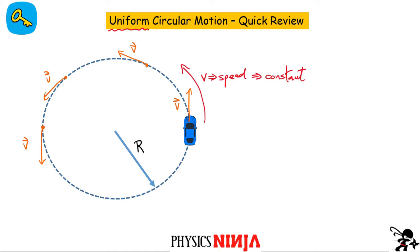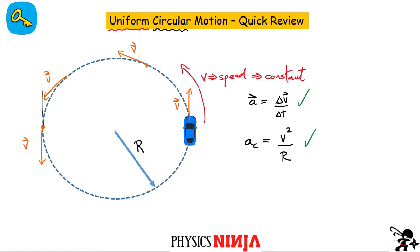Since velocity is changing, there must be an acceleration. That acceleration depends on how velocity changes with respect to time. We call this centripetal acceleration, and its magnitude is simply v² divided by r, where v is the speed and r is the radius. If the speed is constant, the direction of the acceleration is always toward the center of the circle — which is why we call it centripetal acceleration.